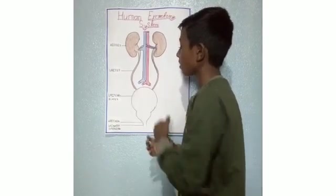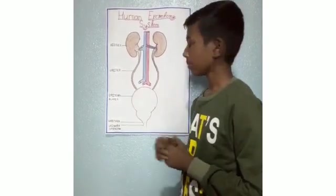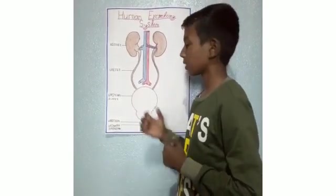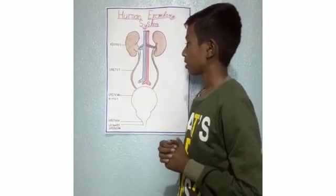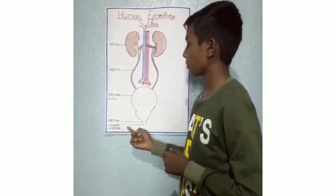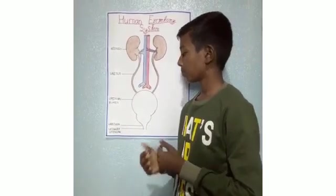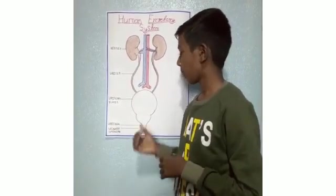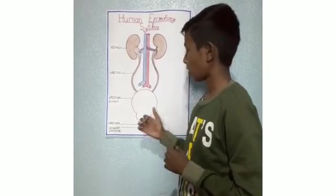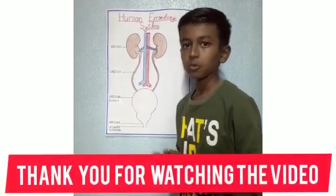It is a sac-like structure which is used to store the unwanted substances. Ureter and urinary opening are the end of the excretory system, and these both play an important role in passing out of unwanted substances. Thank you. Jai Hind.